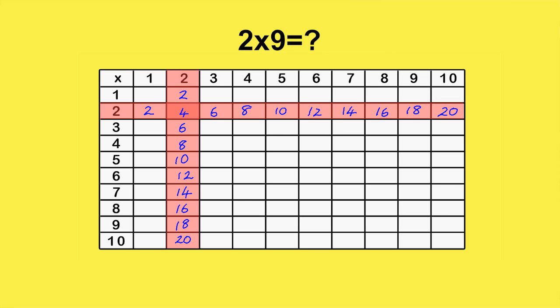Now, let's say you want to look up what two times nine is. You go down the twos column until you reach the ninth row and read off the answer. Eighteen.